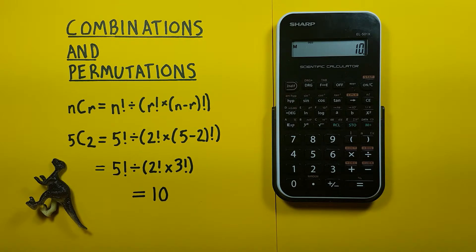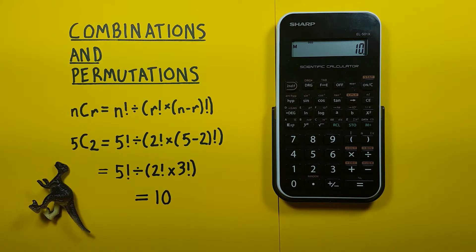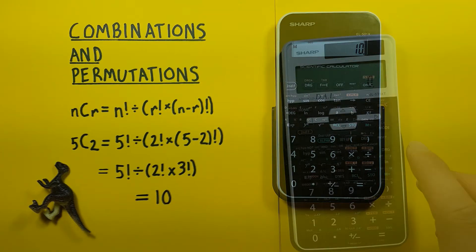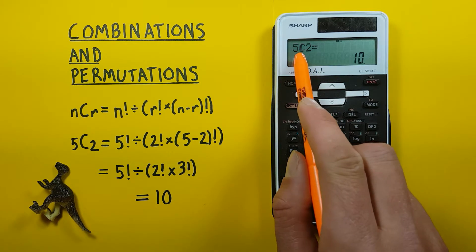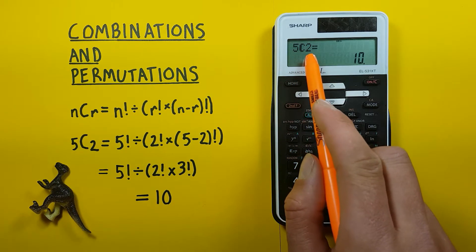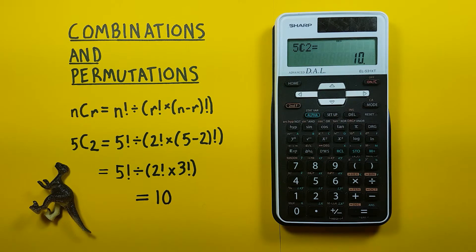and we see we get a result of 10 letting us know there are 10 possible combinations. We can confirm this on a different calculator that does have a combinations function key. So if we use our Sharp EL-531 we can simply press 5 second function 5 which is the NCR key there and then 2 and then equals.